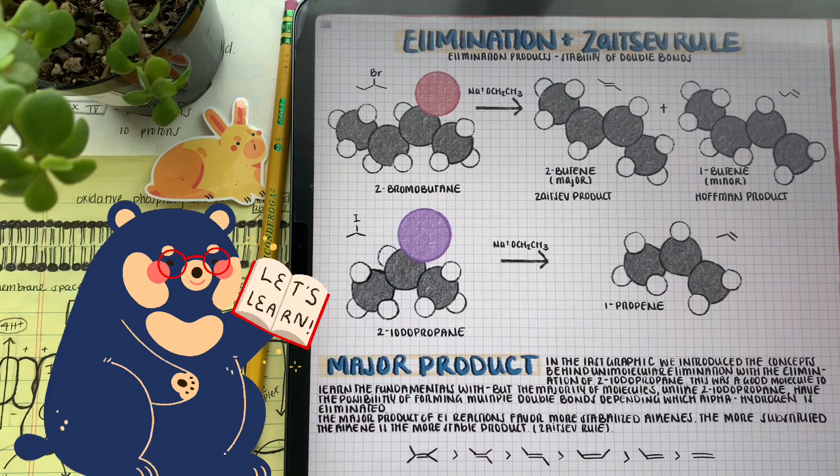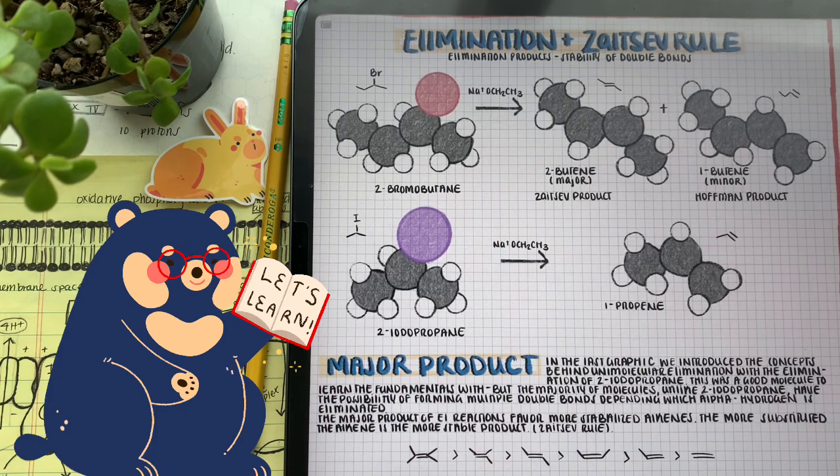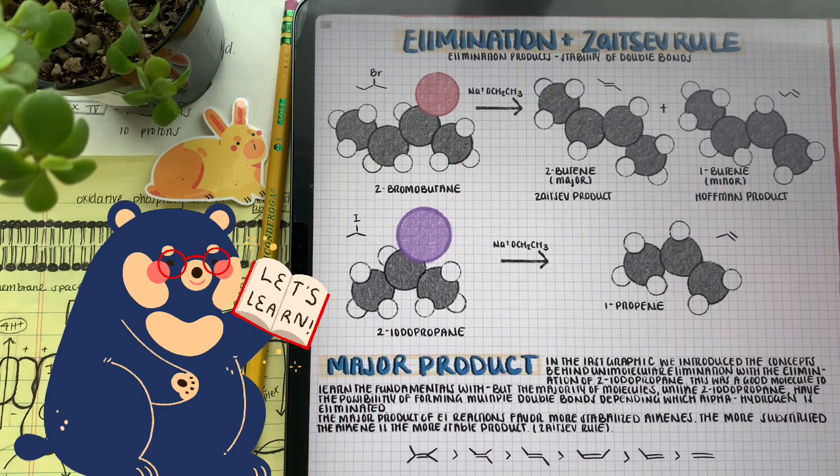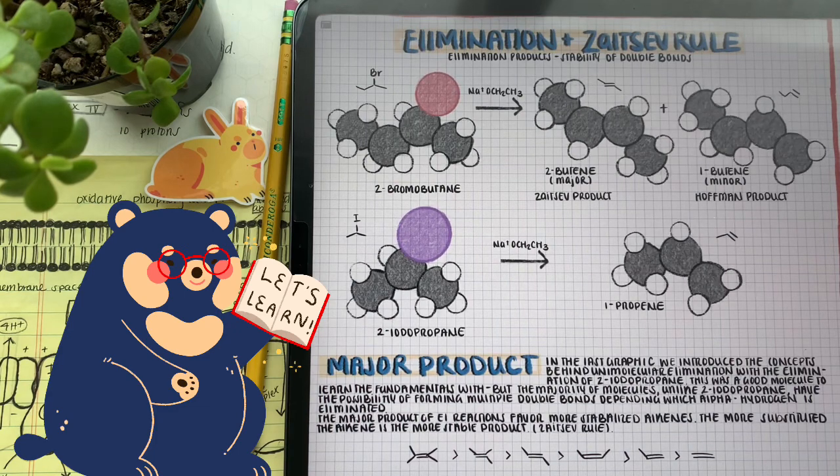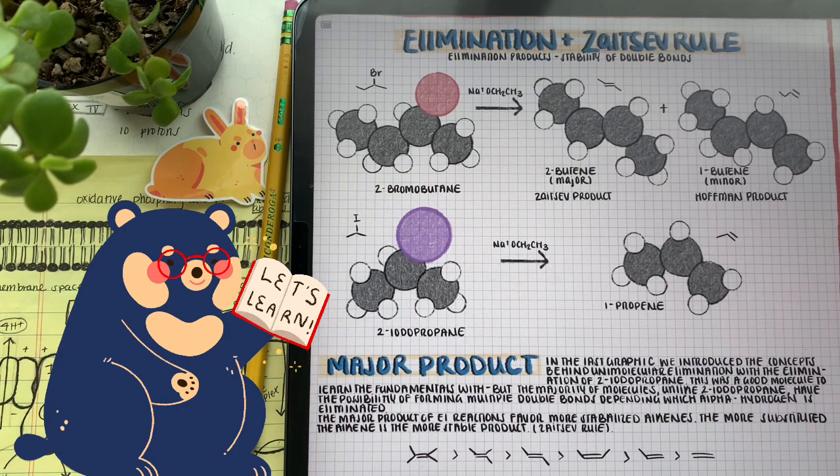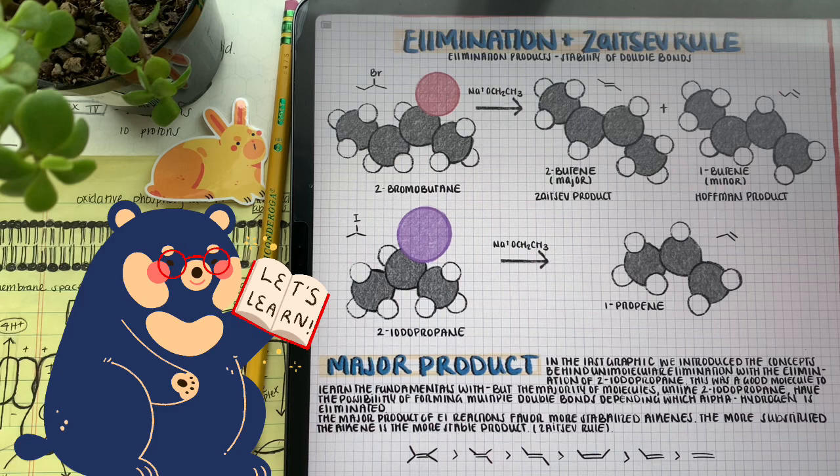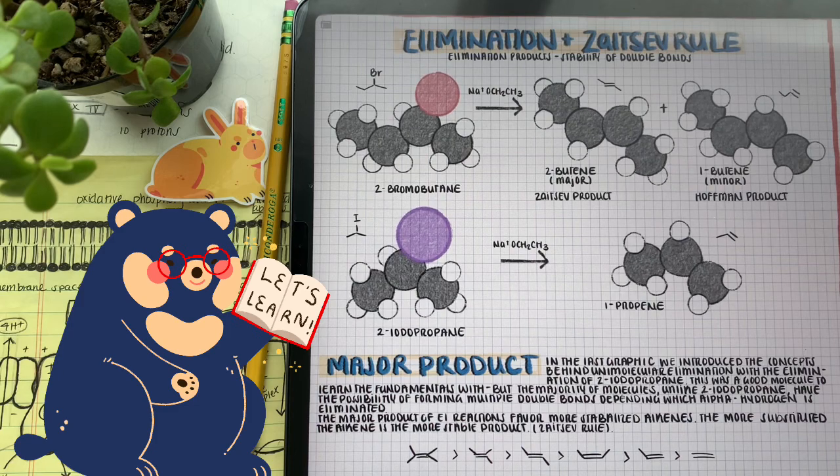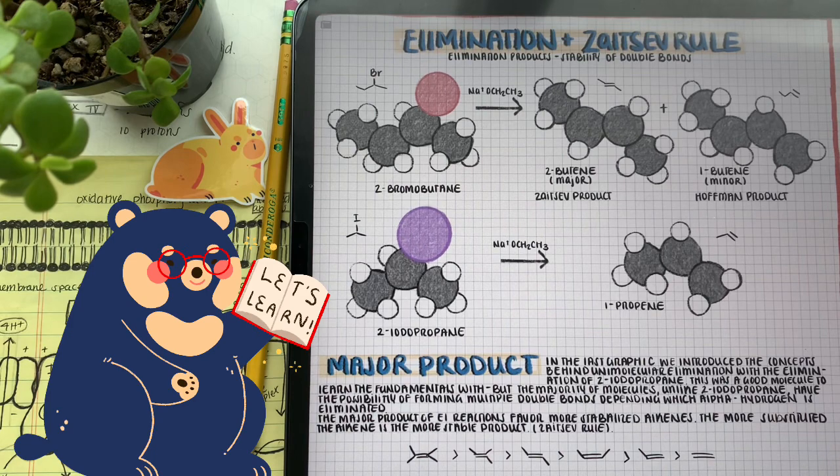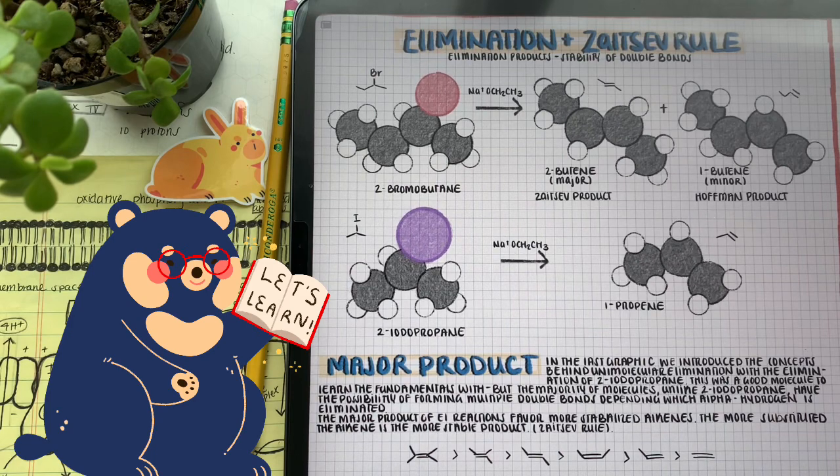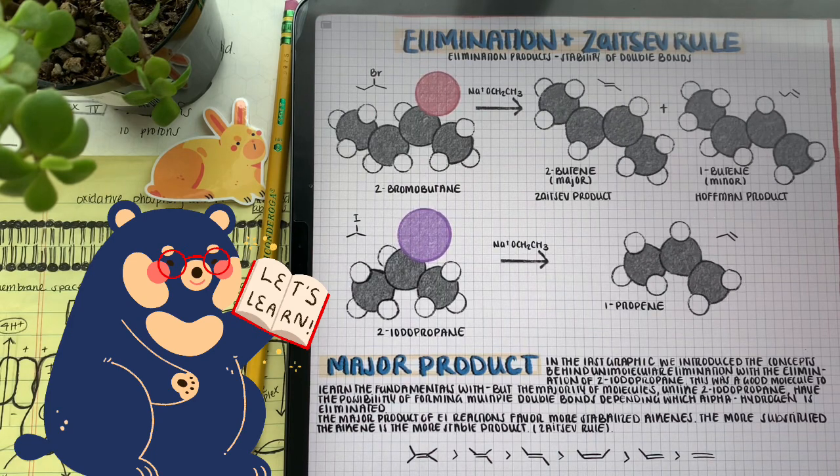If our nucleophile decides to attack a beta hydrogen off of the third carbon, it's going to result in a substituted double bond in which we call the Zaitsev product. It's because it's the most substituted double bond product we can form throughout this elimination process. If it attacks a beta hydrogen from the first carbon, we're going to result in what we call a Hoffman product, not as substituted.